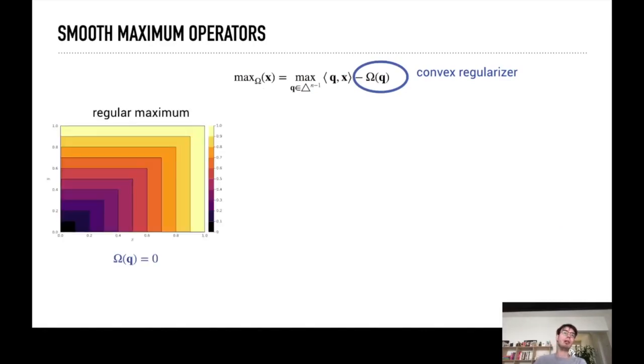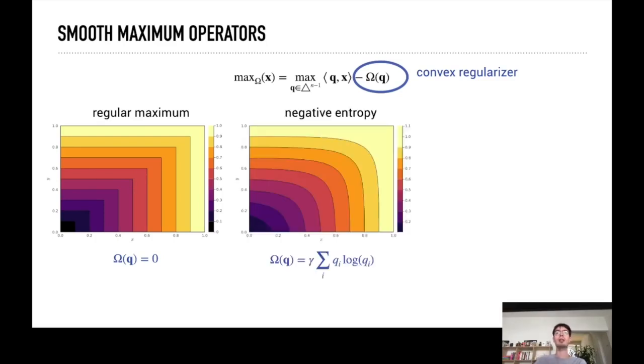Now if you just discard this omega then this behaves as a regular maximum, so a contour plot of maximum between two numbers. You see straight lines with a corner that does not differentiate well.